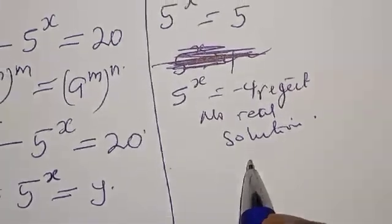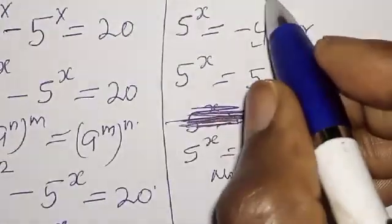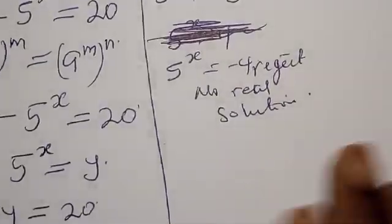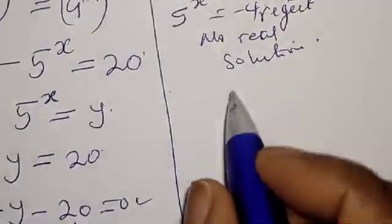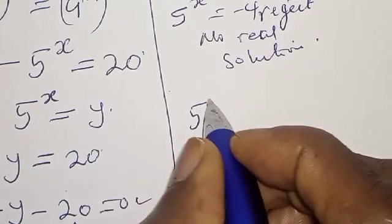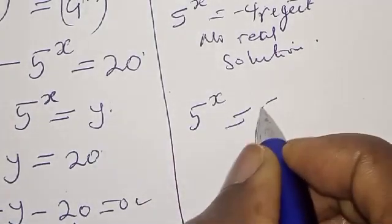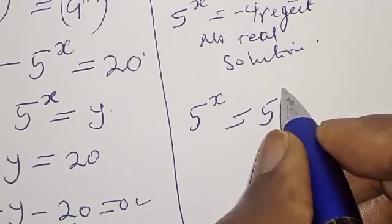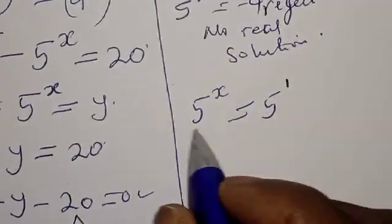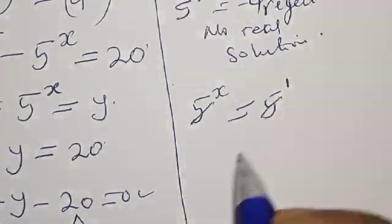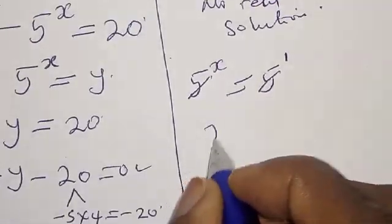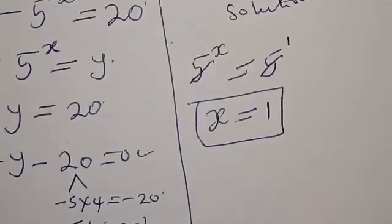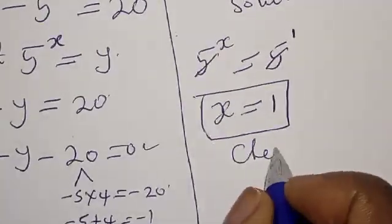From the second case, y equals 5, so 5 raised to power x equals 5, which is the same as 5 raised to power 1. Since they have the same base, the exponents must be equal, therefore x equals 1. That is the value of x.